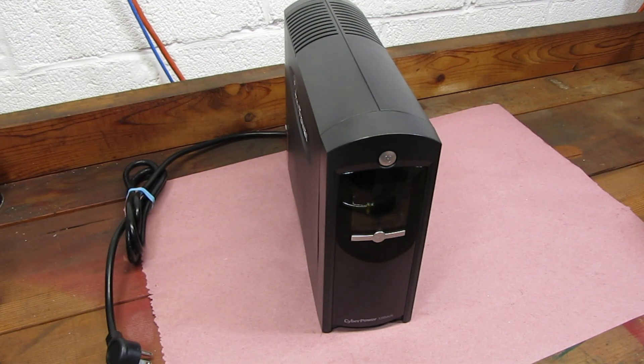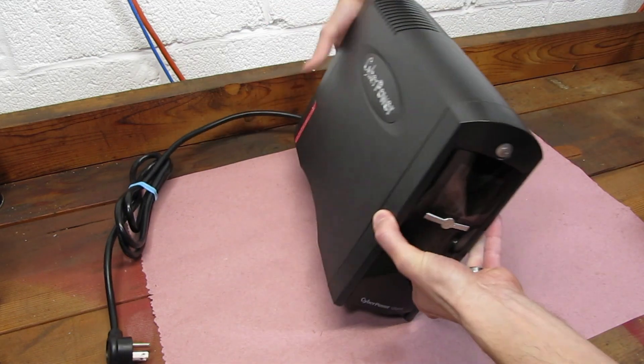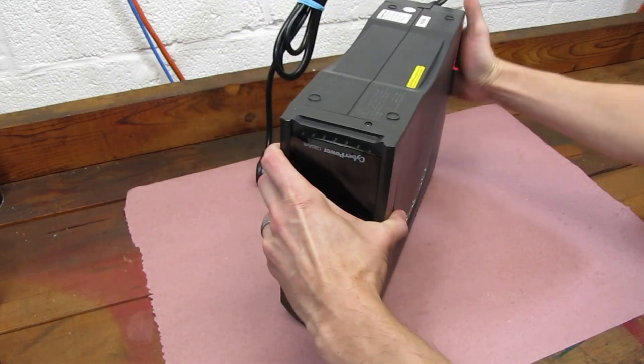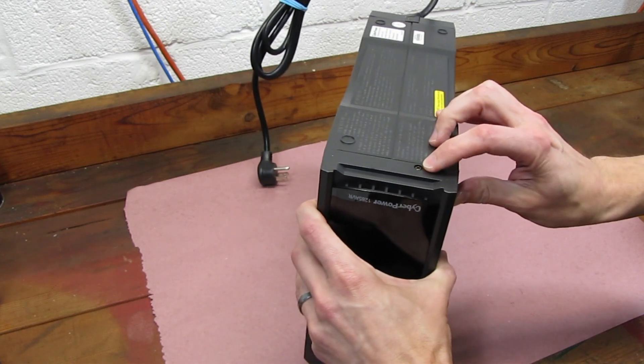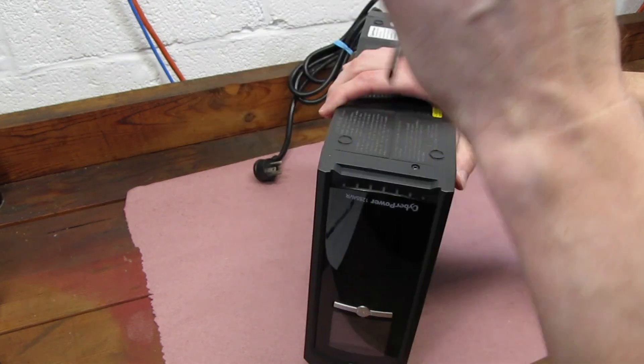To get to the batteries on this UPS, you have to turn it over and find the screw in the front. It's right here. Use a Phillips head screwdriver to remove it.